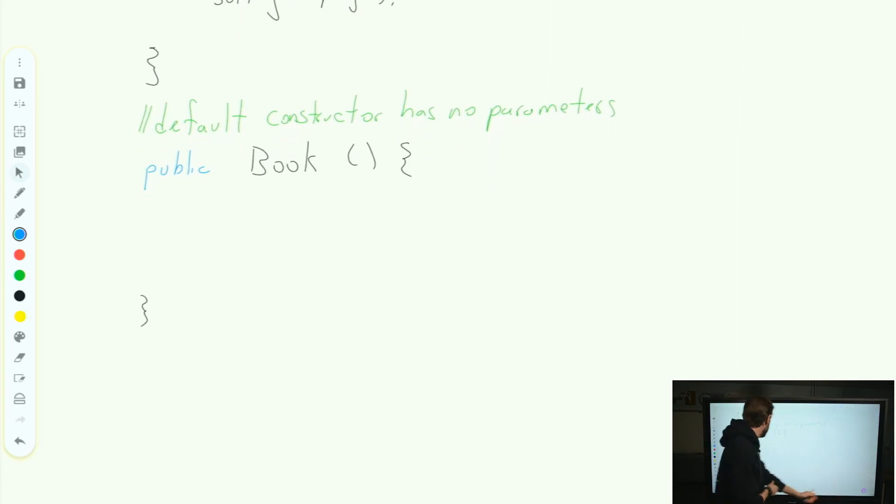It's the this. A complicated one. This keyword. The keyword this, T-H-I-S, refers to the current object that you are referencing. So this refers to the current object that you are referencing.